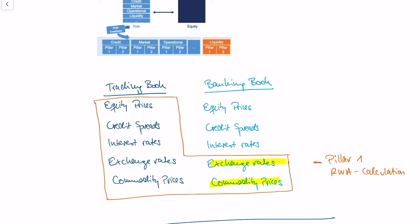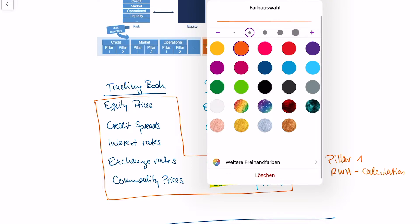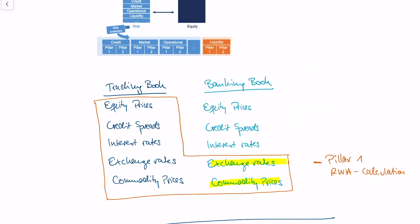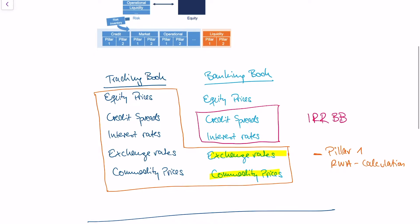Interest rate risk in the banking book is concerned with changing credit spreads and interest rates in the banking book. In IRRBB, we're trying to understand whether changing interest rates actually affect all assets which belong to the banking book. I'll give you a quick example showing why this is important and how banks are doing it.